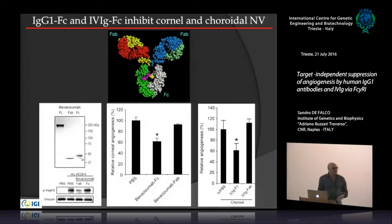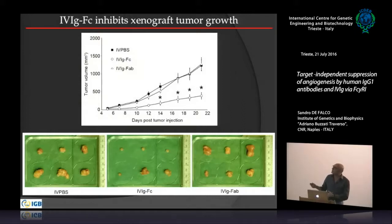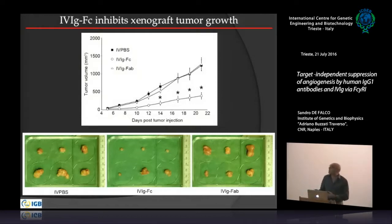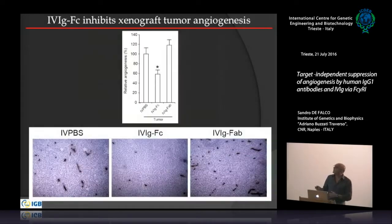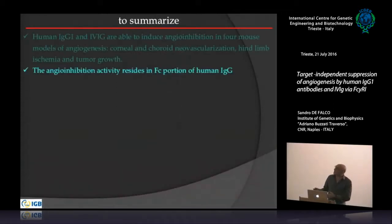We also evaluated IVIG Fc and IVIG Fab in tumor models. In the xenograft model, IVIG Fc showed strong inhibition of tumor growth compared to control, while IVIG Fab did not work. Analysis of vascularization confirmed the activity is confined to the Fc portion of the molecule.